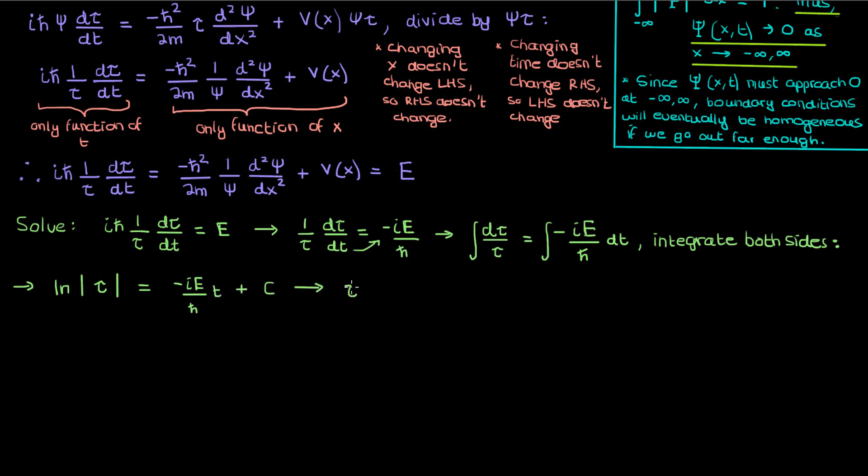If we take the exponentials of both sides we'll find that tau equals the exponential of this entire right hand side. Using the sum rule of exponents we can split up this exponential of sums into the product of two exponentials. Now the exponential of the constant c is just another constant which I'll call A so eventually we'll find that tau is A times the exponential of negative i E over h bar times t.